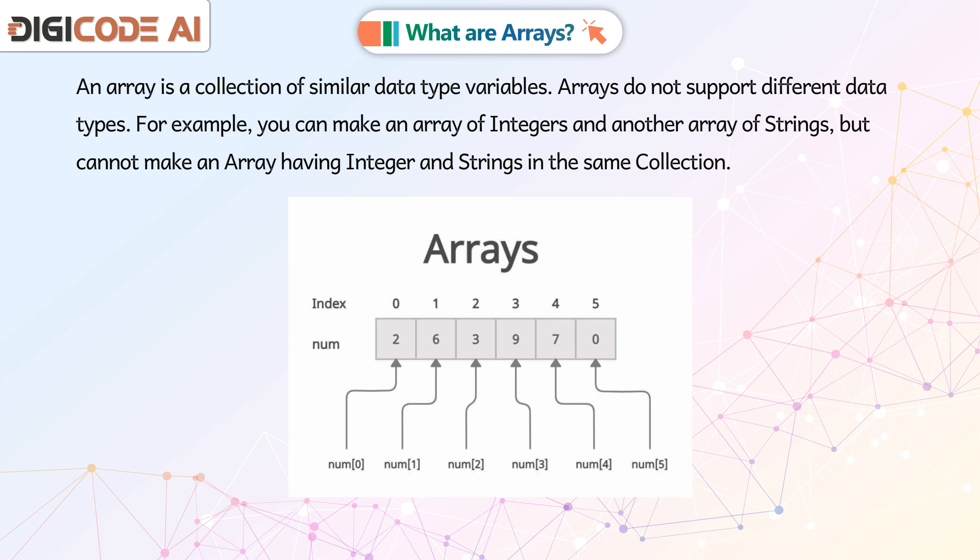An array is a collection of similar data type variables. Arrays do not support different data types. For example, you can make an array of integers and another array of strings, but cannot make an array having integers and strings in the same collection.